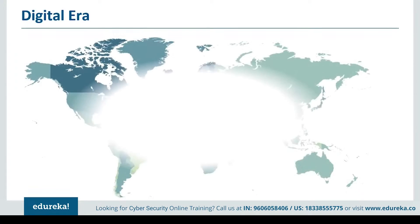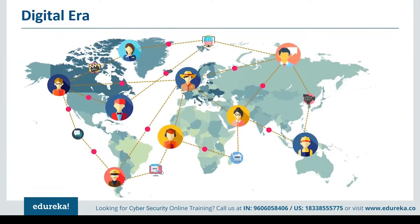The internet today informs, entertains and connects us — it's the backbone of the global economy. Our devices, connected through the internet and other networks, open up a world of possibilities. We can access information without keeping it on our devices permanently and communicate with others across the world. But these connections also leave our devices vulnerable to damage and our information vulnerable to theft.